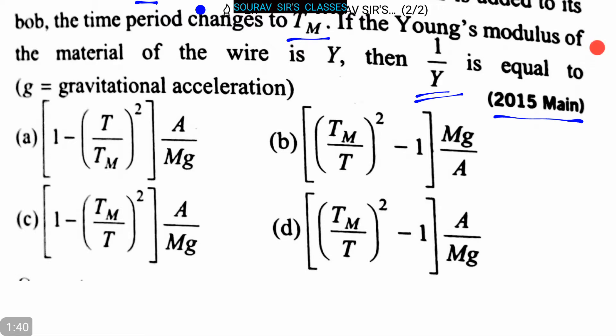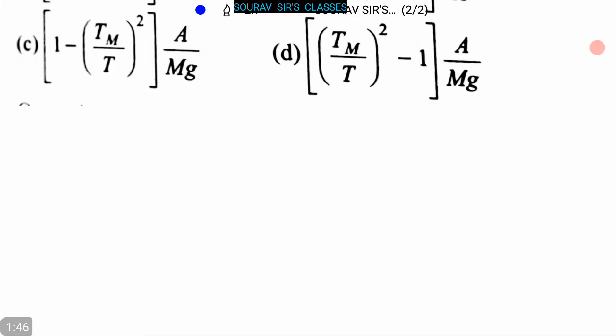Option D, the last option, is TM by T whole square minus 1 into A by MG.